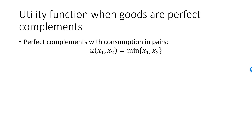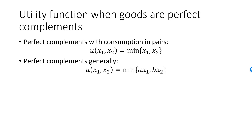Of course, any monotonic transformation of this function will work equally well. I can generalize this to perfect complements which are not consumed in pairs. The utility function we will use is then the min of some constant a times x1 and another constant b times x2.